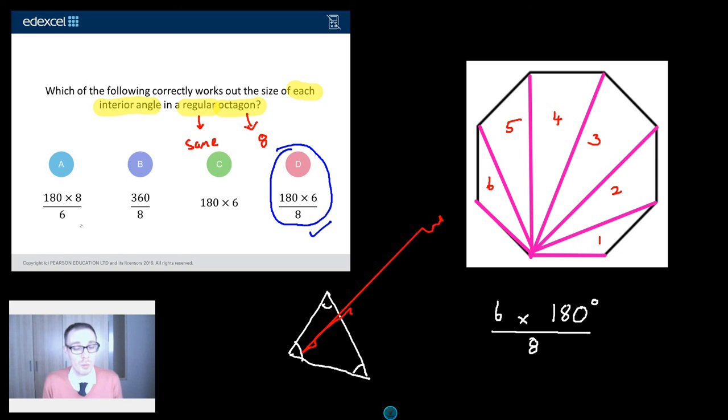Well, I reckon this is someone trying to remember the formula. They're just trying to remember, what is it? A times by 180. I do sum up with a number of size, blah, blah, blah. They've got the eight and the six the wrong way around. And you do that unless you understand exactly what you're doing.